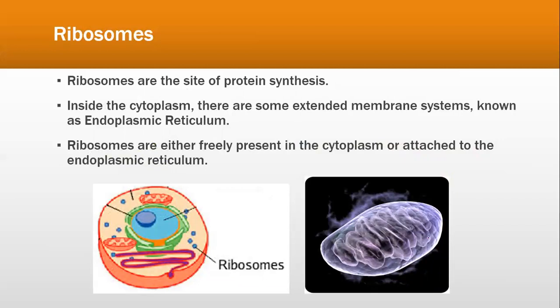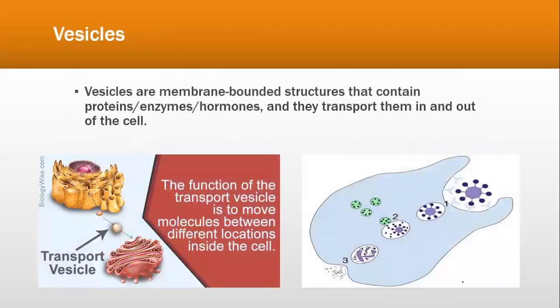Ribosomes are present near or on the endoplasmic reticulum. The endoplasmic reticulum consists of extended membrane systems that arise from the nuclear membrane, and ribosomes are attached on top of it. On these ribosomes, proteins are basically synthesized and made.